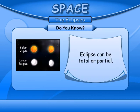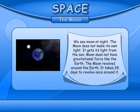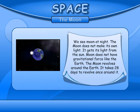An eclipse can be total or partial. The Moon. We see the Moon at night. The Moon does not make its own light; it gets its light from the Sun. Moon does not have gravitational force like the Earth. The Moon revolves around the Earth and takes 28 days to revolve once around it.